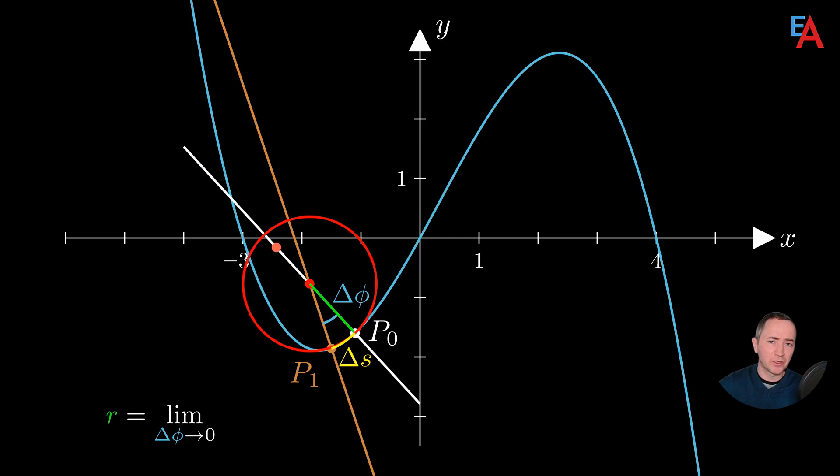Then we get the radius of the oscillating circle as the limit of delta s over delta phi as delta phi approaches zero. The expression delta s over delta phi corresponds to the length of this green segment.